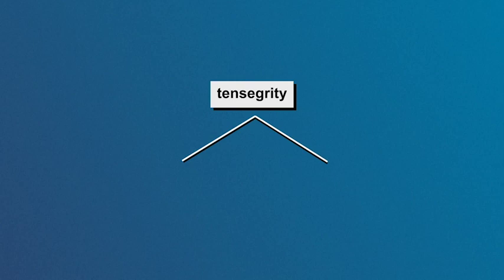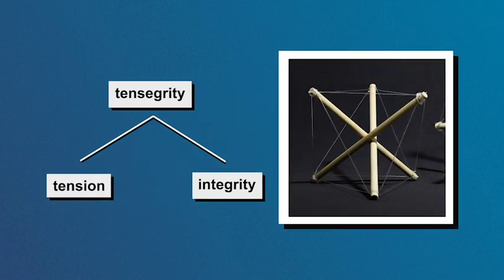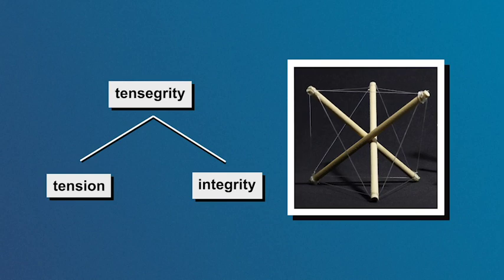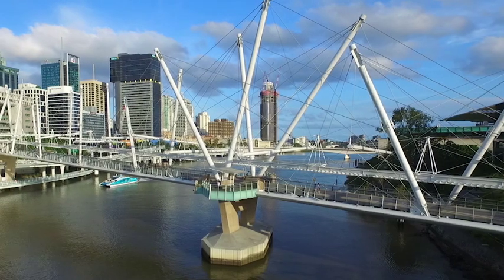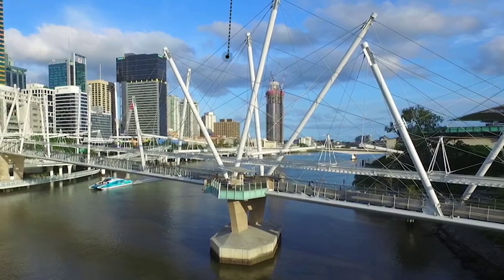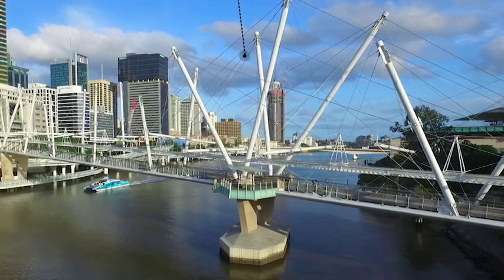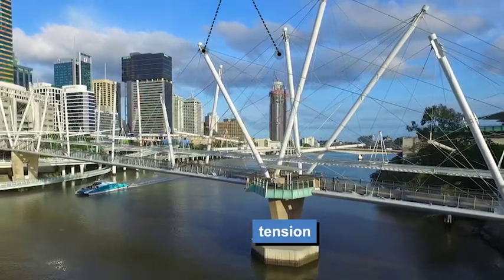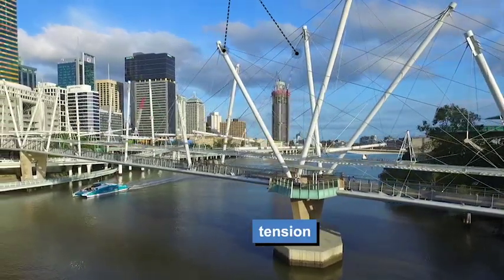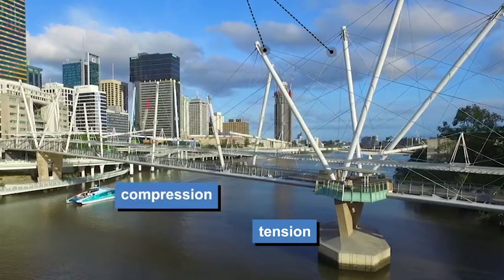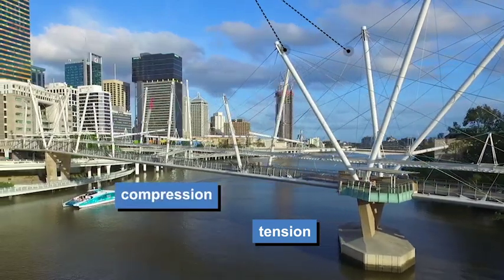Tensegrity is a design principle that incorporates two concepts — tension and integrity — to construct cheaper, lighter, and simpler structures. Take this structure for example. The cords are stretched in a state of tension. They connect the rods, which are in a state of compression, creating integrity in the structure.